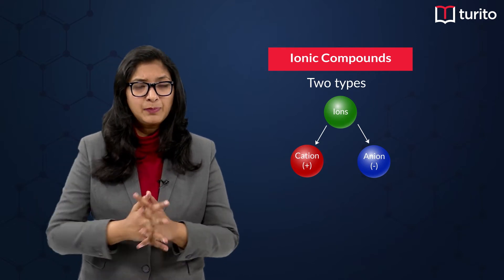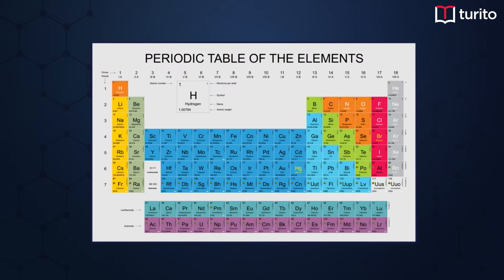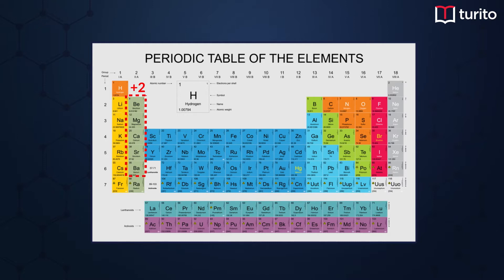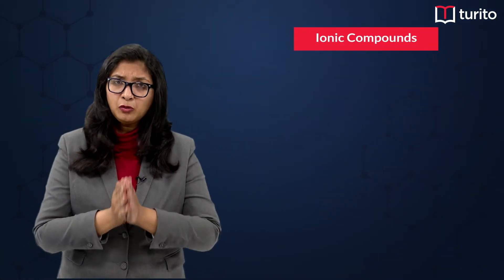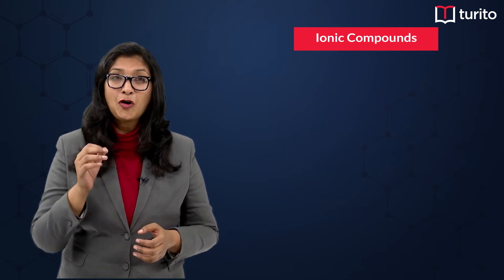In the periodic table, elements in different groups acquire particular charges. Group 1 acquires a +1 charge, Group 2 acquires a +2 charge, and Group 13 acquires a +3 charge. Group 15 acquires a −3 charge, Group 16 acquires a −2 charge, and Group 17 acquires a −1 charge.